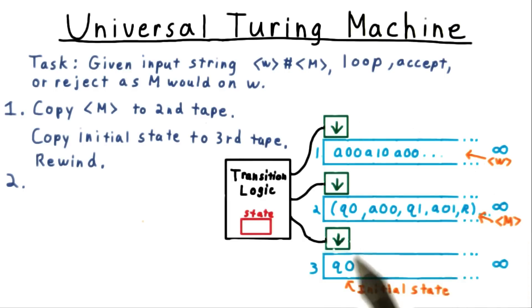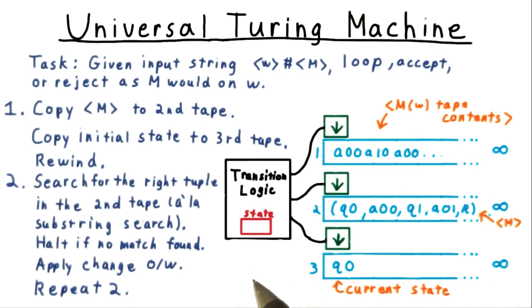Then rewind the heads and begin the second phase of actually simulating the execution. Here we search for the appropriate tuple in the description of the machine. The first element has to match the current state stored on tape 3, and the symbol part has to match the encoding on tape 1. If no match is found, then we just halt the simulation and put the universal machine in an accepting or rejecting state according to the current state of the machine being interpreted.